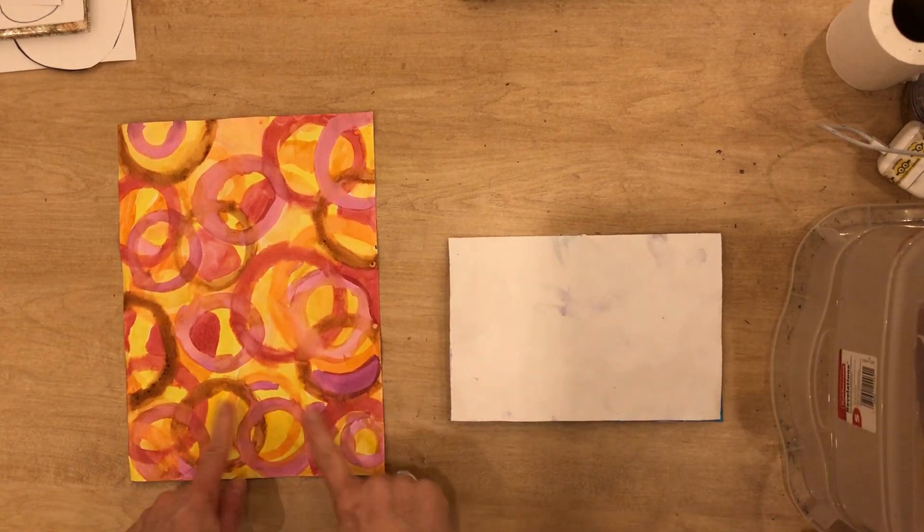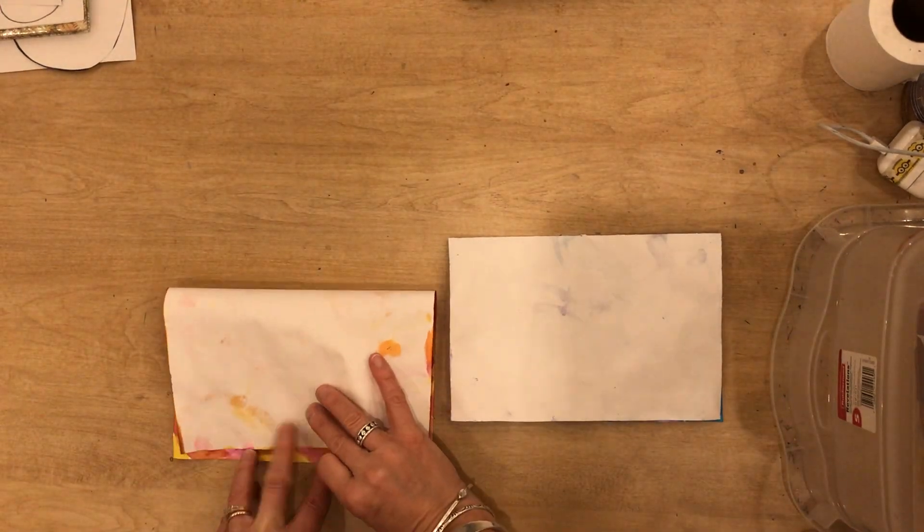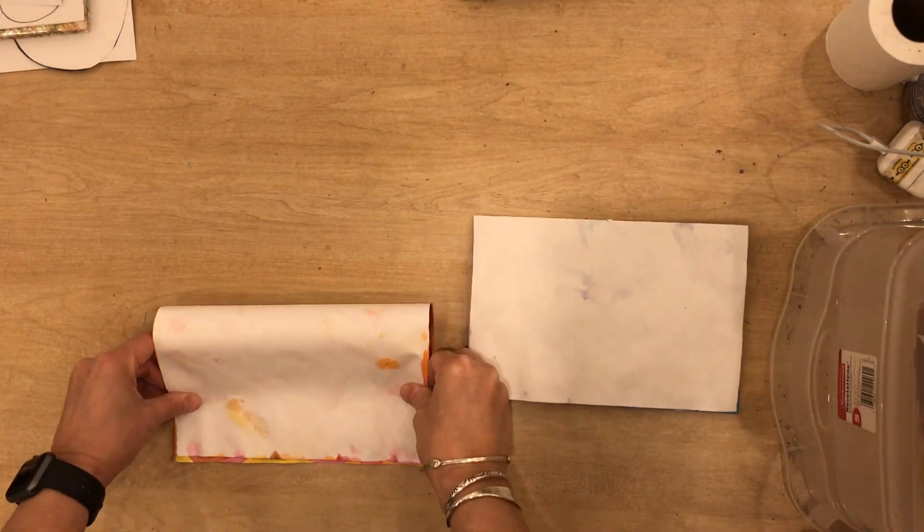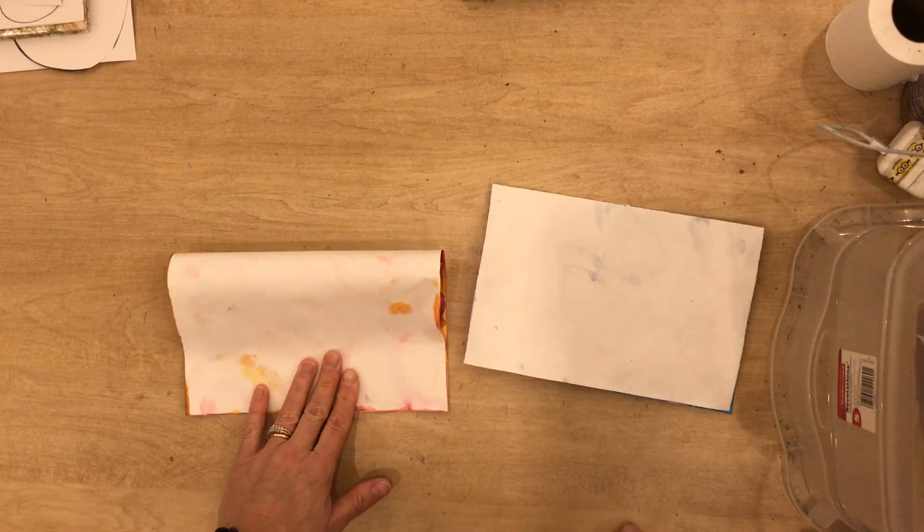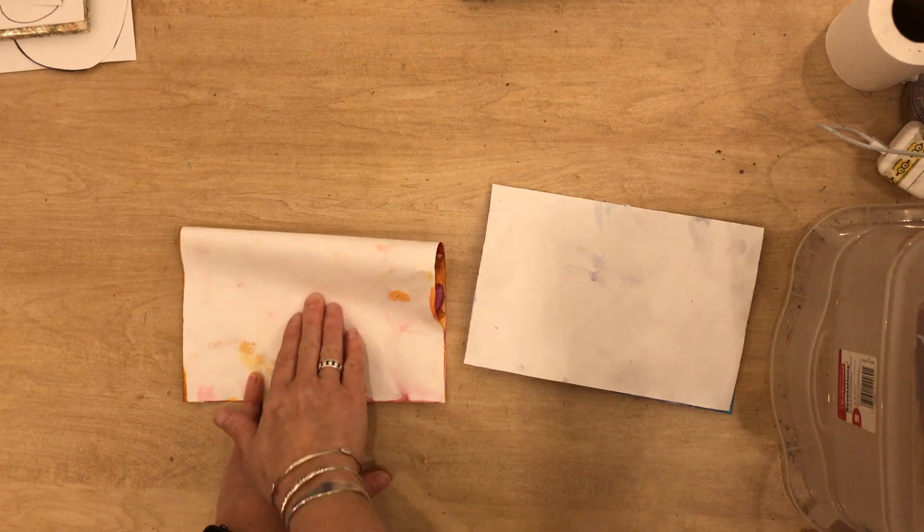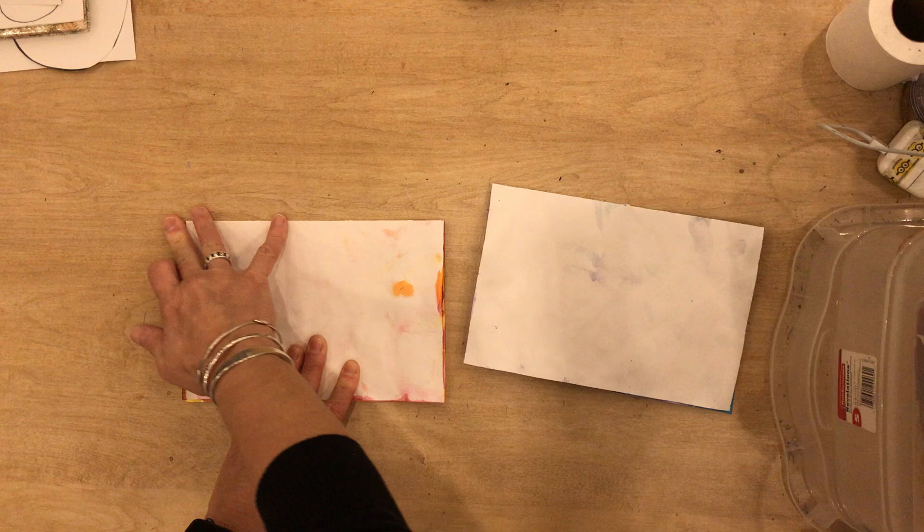That one is done. Now I need to do this one. Take the top, fold it down, match your two bottom edges and your corners. Hold your paper in the middle and slide up and over and up and over.